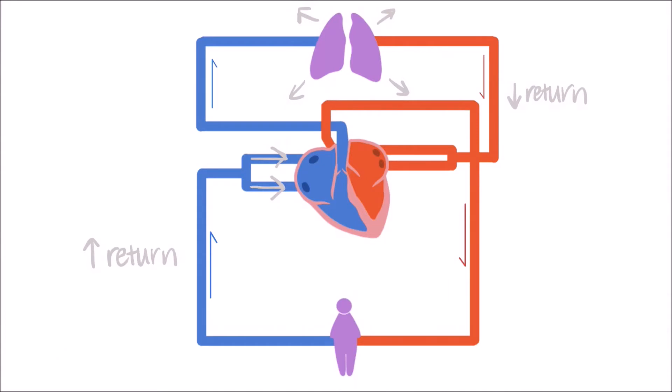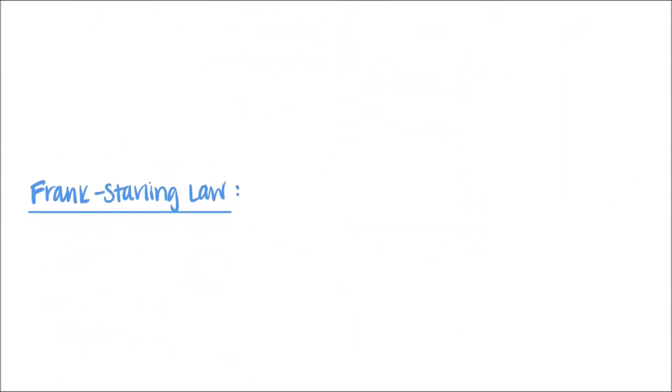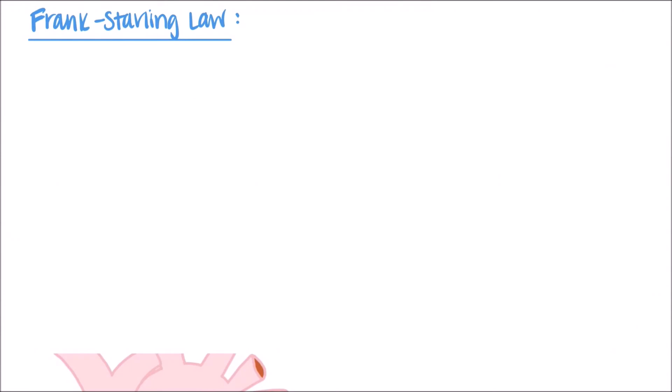The result of both of these factors is much more blood coming into the right atrium than the left. This is where the Frank-Starling law of the heart comes into play. Put simply, the law states that the stretch of cardiac muscle fibers are positively correlated with the strength of the following contraction.